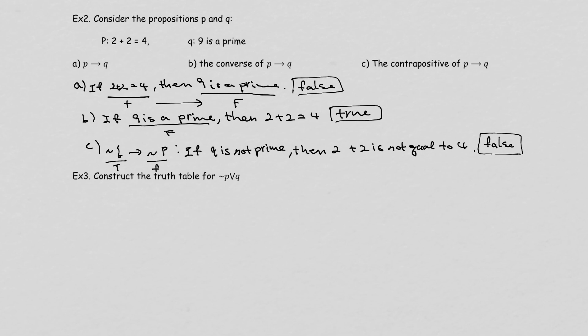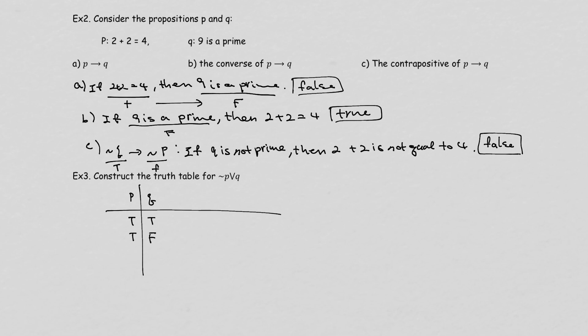In example 3, they didn't give you specific statements, but they want you to find the truth table. With P and Q, there are four different events that can happen: P true and Q true, P true and Q false, P false and Q true, and P false and Q false. These are the four events that can happen with two statements.